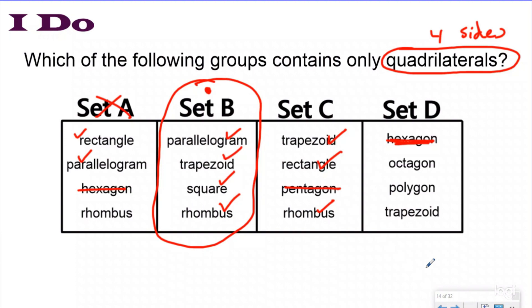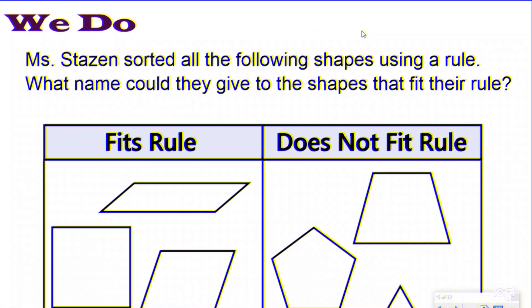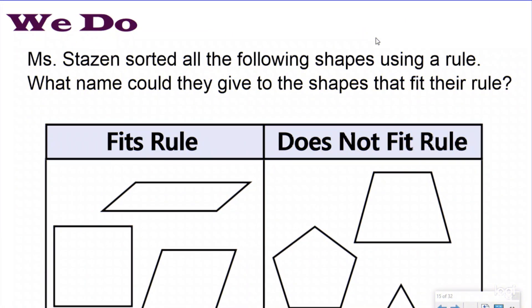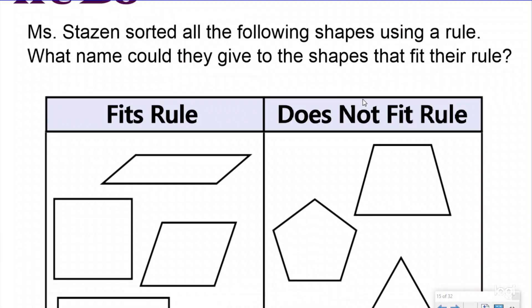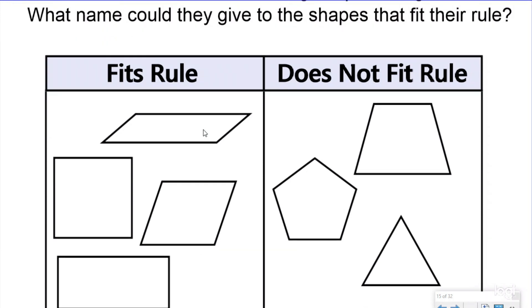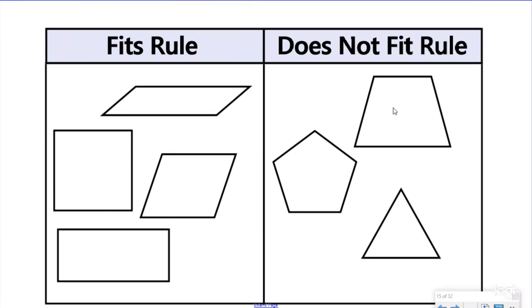Let's take a look at another way they might ask you these questions about categorizing quadrilaterals. The problem says Miss Stazen sorted shapes using a rule. What name could be given to the shapes that fit the rule? They're working backwards — they've already categorized the shapes and you're looking for the attribute they used, kind of like finding out our circles were sorted by size.